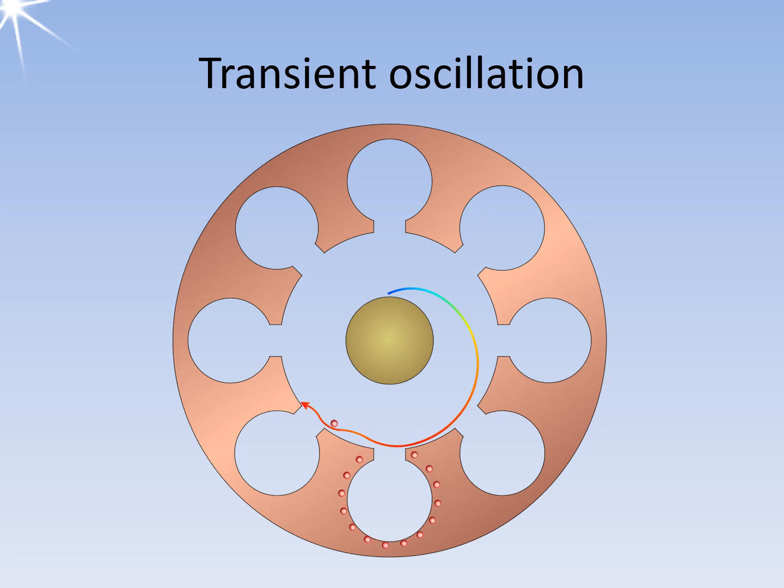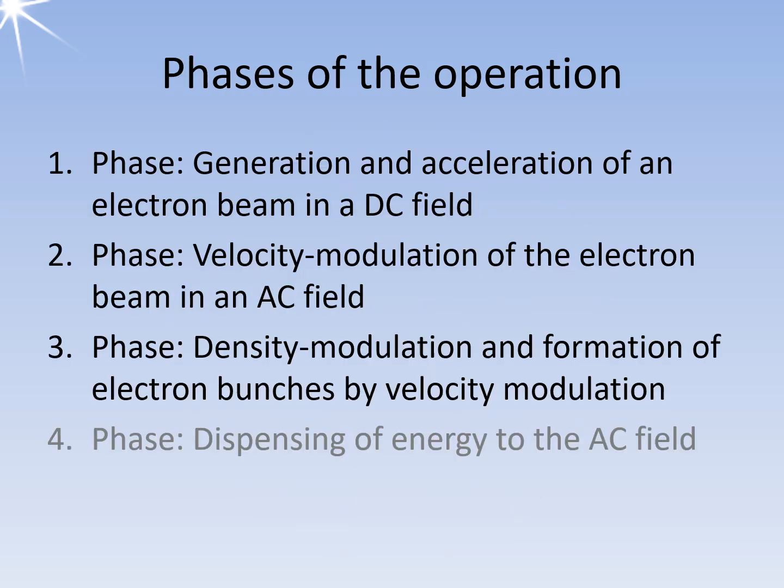For electrons arriving half an oscillation period later, the anode section has become more positive, and this additionally accelerates the following electron. Due to the now alternately more positive and more negative charge at this section of the anode, the electron flies on in a zigzag course. However, it is not just a single electron that is moving in the moving space, but a whole cloud of electrons. Some fly past a section with a more positive potential and are accelerated more, while others fly past the neighboring section with a more negative potential and are slowed down slightly. The RF field in the resonators therefore initially causes a velocity modulation of the electrons, and after the electrons have traveled a short distance, a density modulation occurs.